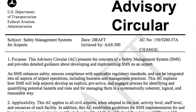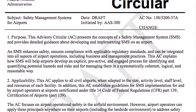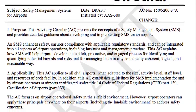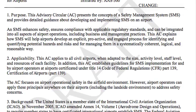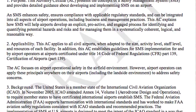This Advisory Circular provides guidance on how to implement an Airport Safety Management System, or SMS. The FAA released a draft of the Advisory Circular, or AC, in late June. You can view the AC on FAA's website. ACI has been anticipating the release of this AC since the FAA announced it would propose standards for airport SMSs back in October 2010.